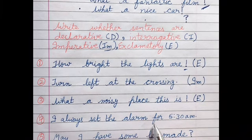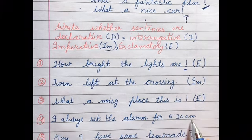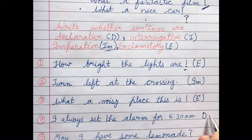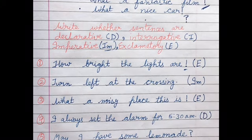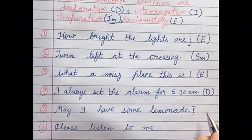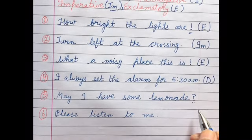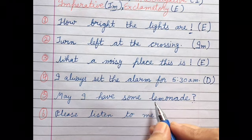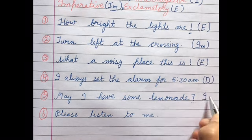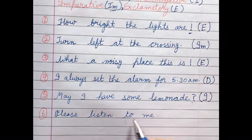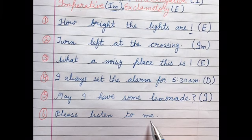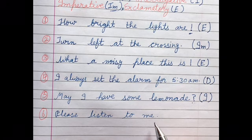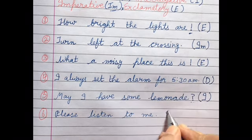Fourth: 'I always set the alarm for 5:30 a.m.' — this is a declaration, you are telling some information, so it is declarative. Fifth: 'May I have some laminate?' — this has a question mark, so it is interrogative. Sixth: 'Please listen to me.' — in this you are making a request, and we said requests fall under imperative sentences, so it is imperative.